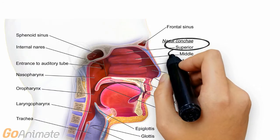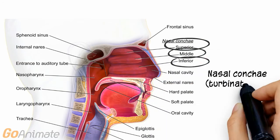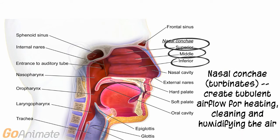The nasal cavity contains bony processes called conchae, or turbinates. There are superior, middle, and inferior conchae. The superior and middle conchae are processes on the ethmoid bone. The inferior conchae extend from the maxillary bone. The nasal conchae create turbulent air flow for heating, cleaning, and humidifying the air.